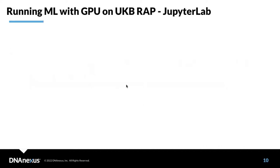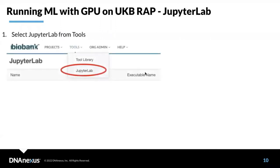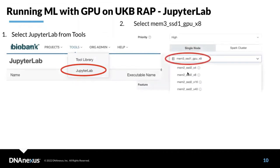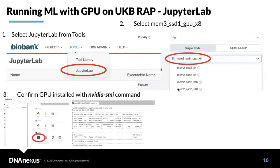To run machine learning models with GPUs on the UK BRAP, you can run a JupyterLab session. Select JupyterLab from tools, and importantly, you will need to select a GPU instance type — for example, the mem3 GPU instance type. Once your session is initialized, you can open JupyterLab and check with a specific command that all the environment is ready to go.